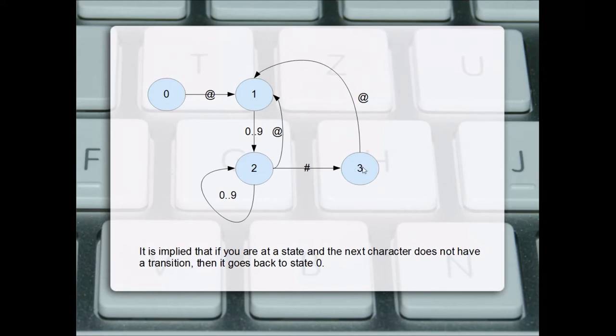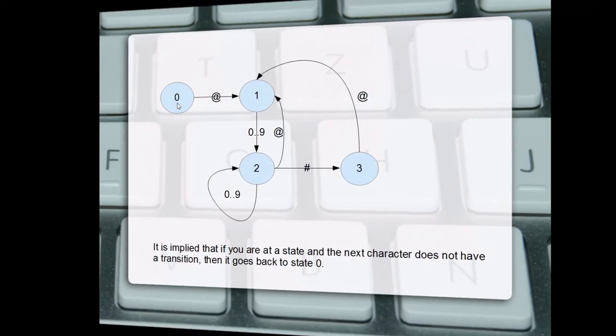And in state three, if we see an @ sign, we go back to state one that begins the pattern. So it could be @#123#. And it's kind of implied that at any state, if the next character is a character not on a transition line, that it automatically goes back to state zero. So if we're at state two and the next character is a B, the letter B, there's no transition line leaving state two for letter B. So it's implied it goes back to state zero.